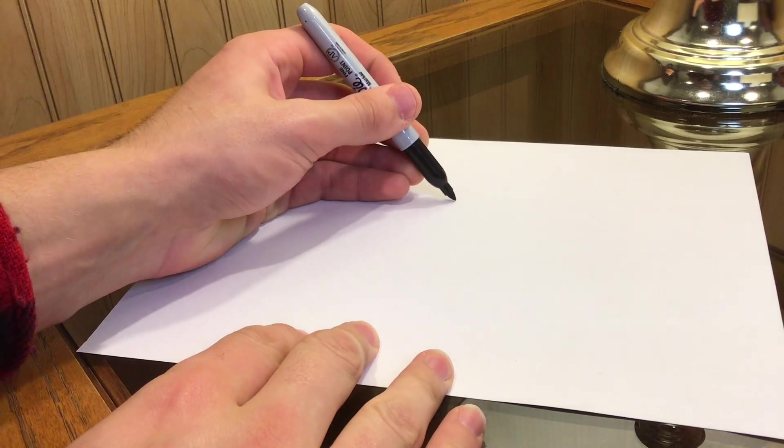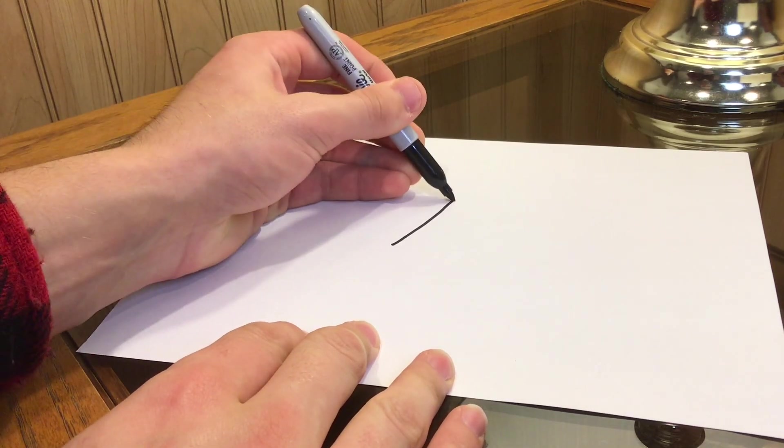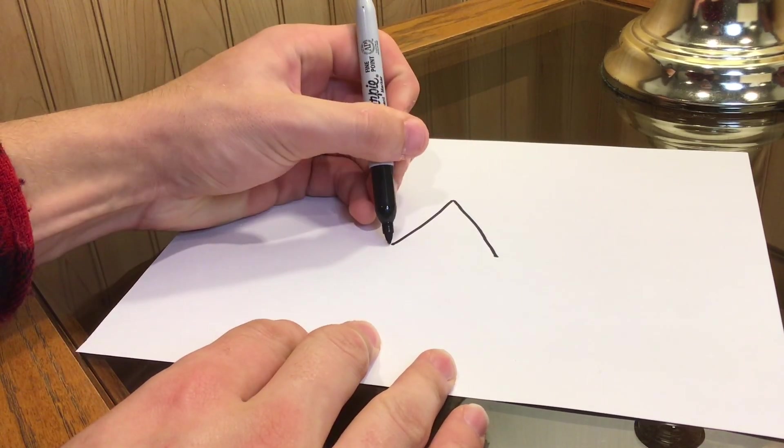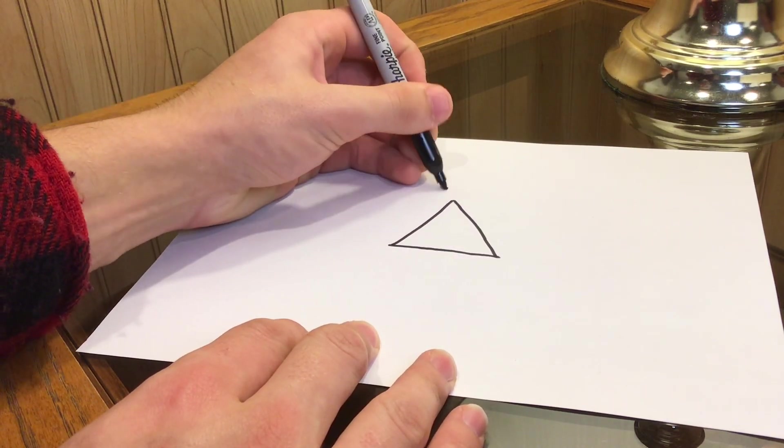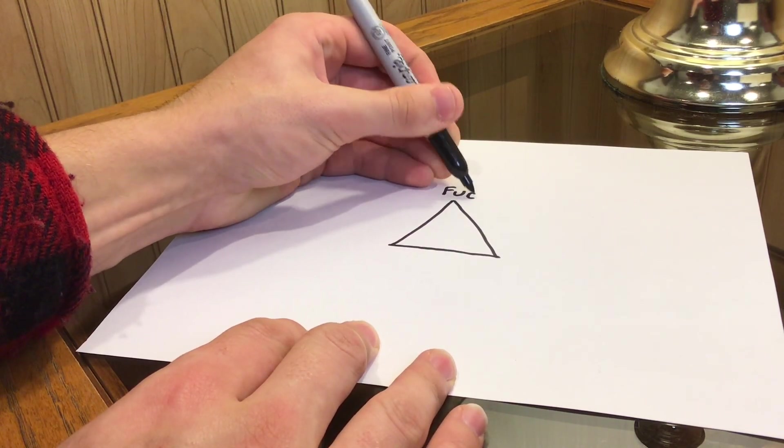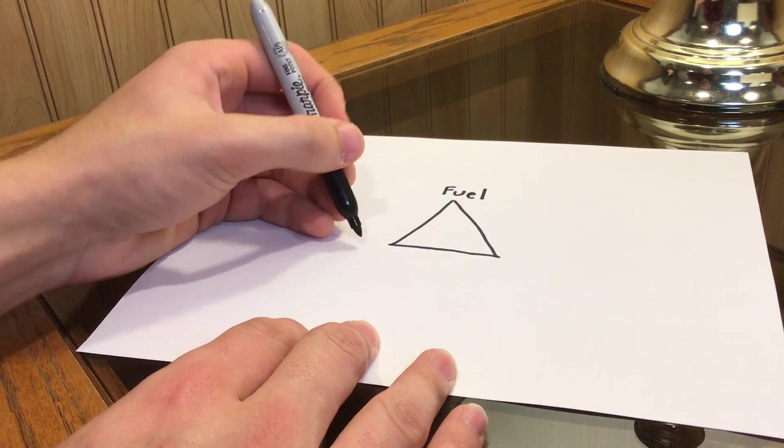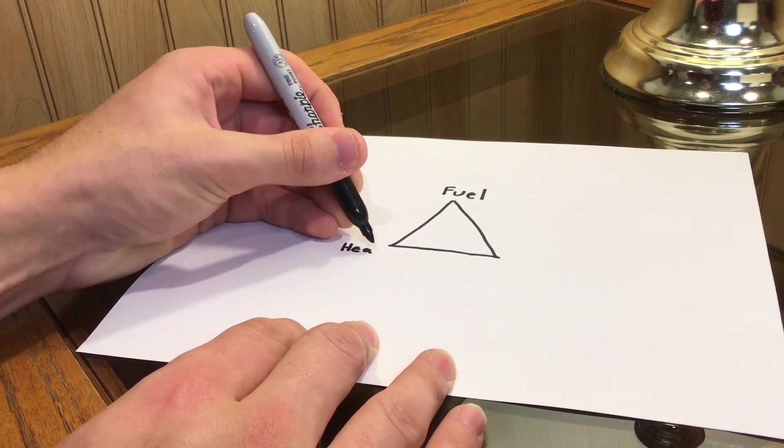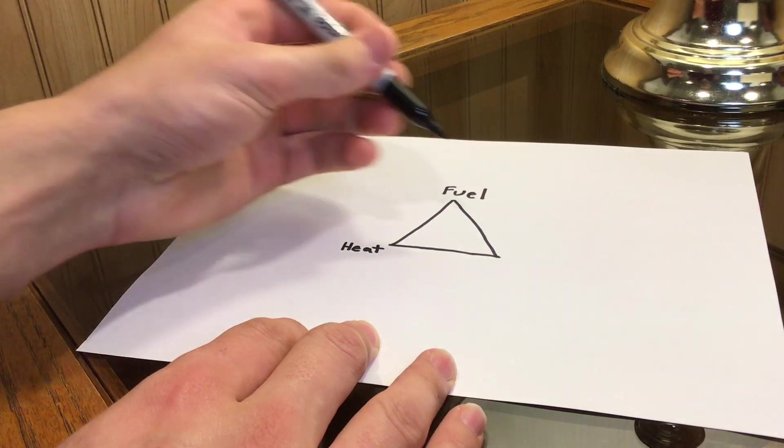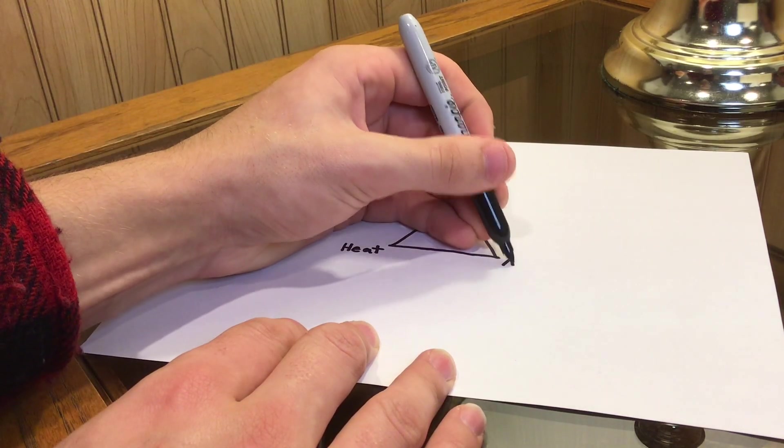So the question may be, why does this even work in the first place? And to answer that question, I'm going to illustrate using the fire triangle. It's really a tetrahedron, but that's for another video. Three necessary components for combustion are fuel, heat, and air, or more accurately, oxygen.